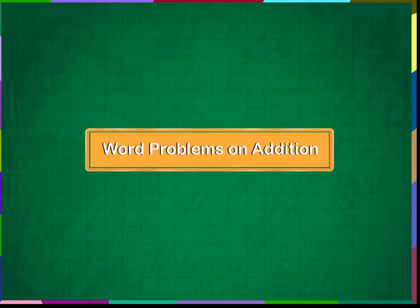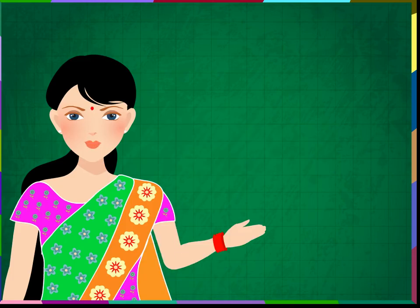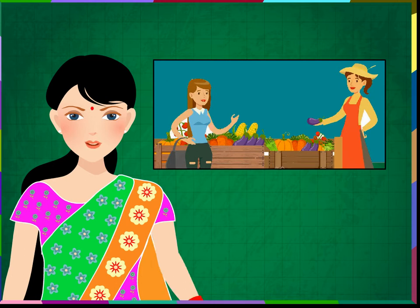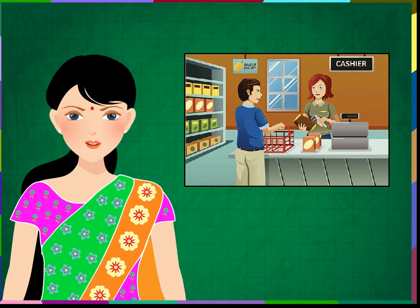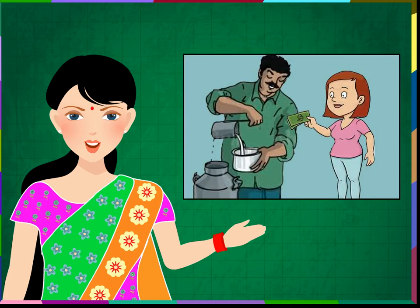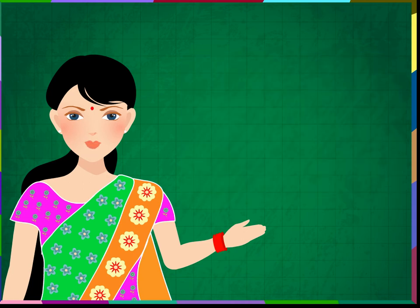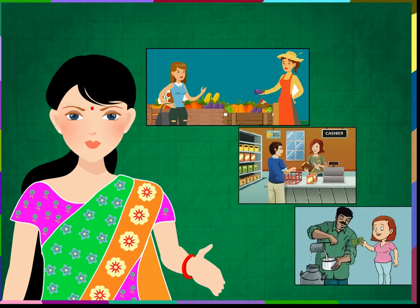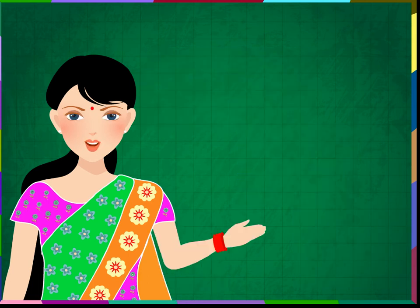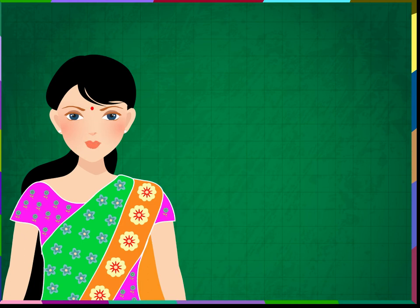Word problems on addition. We use addition in our day-to-day life. Your mom buys vegetables and adds all the costs to pay the shopkeeper. Your father buys grocery and adds the cost of all items. We also pay the milkman by adding the liters of milk bought in a month. Vegetable vendors, grocers, and milkmen help us in daily living — they are our helpers and we should respect them. Now let us see word problems and solve them by addition.